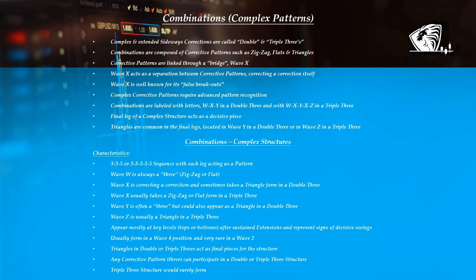Combinations are complex structures with a 335 or 33335 sequence, with each leg acting as a pattern. Wave W is always a 3 — zigzag or flat. Wave X is correcting a correction and sometimes takes a triangle form in a double 3. Wave X usually takes a zigzag or flat form in a triple 3. Wave Y is often a 3 but could also appear as a triangle in a double 3. Wave Z is usually a triangle in a triple 3. Combinations appear mostly at key levels such as tops and bottoms or after sustained extensions, and they represent signs of decisive upcoming swings. Combinations usually form in a wave 4 position and very rarely in a wave 2 position. Triangles in double or triple 3s act as final pieces for the structure. Any corrective pattern can participate in a double or triple 3 structure. Triple 3 structures would rarely form.